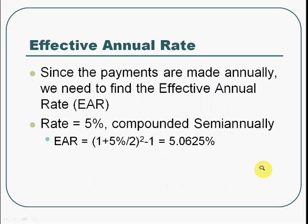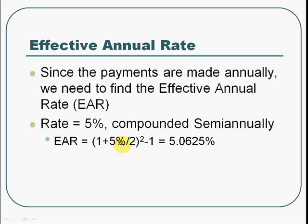So the first thing is that we have to find the effective annual rate. This is because the interest is compounded semi-annually. In order to simplify the calculation, we should find the effective annual rate first. It is easy if you remember the equation for effective annual rate. In this question, it should be 1 plus 5% divided by 2, to the power 2, minus 1. And this gives you 5.0625%.